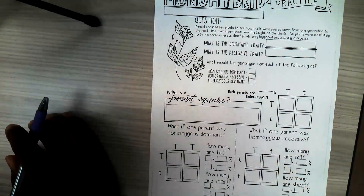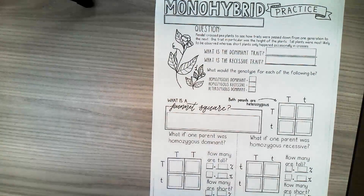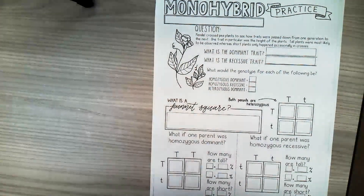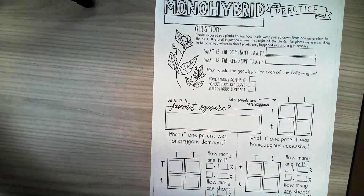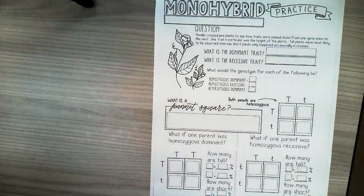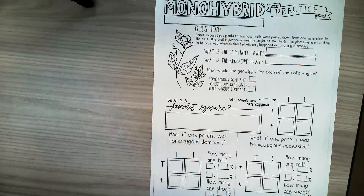We're back again, time for another video. Today's video is going to be a continuation on genetics. We talked about different vocabulary and terminology we would hear throughout this unit, and now we're going to look at Punnett squares using our dominant and recessive traits.